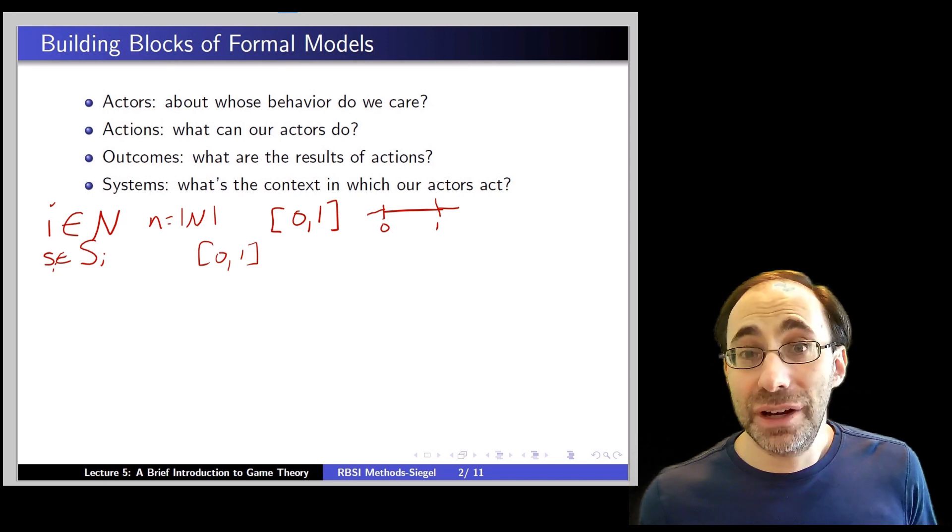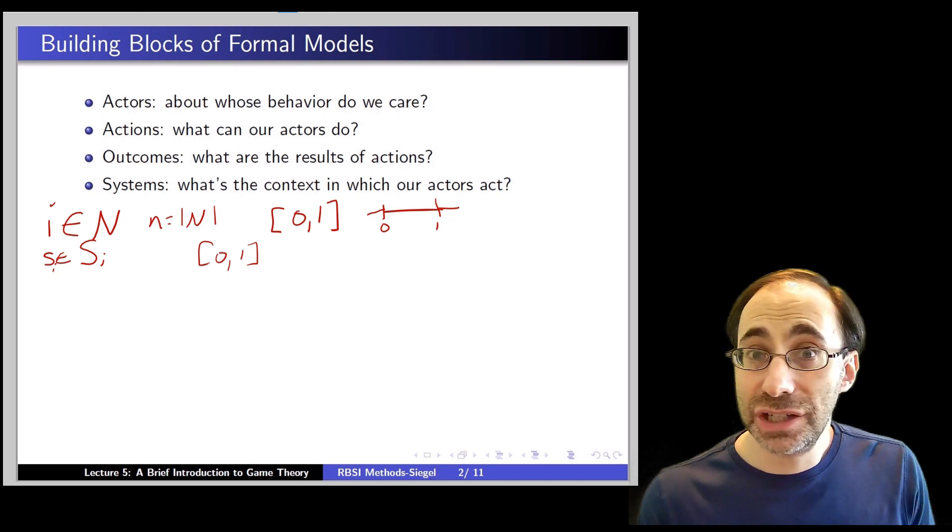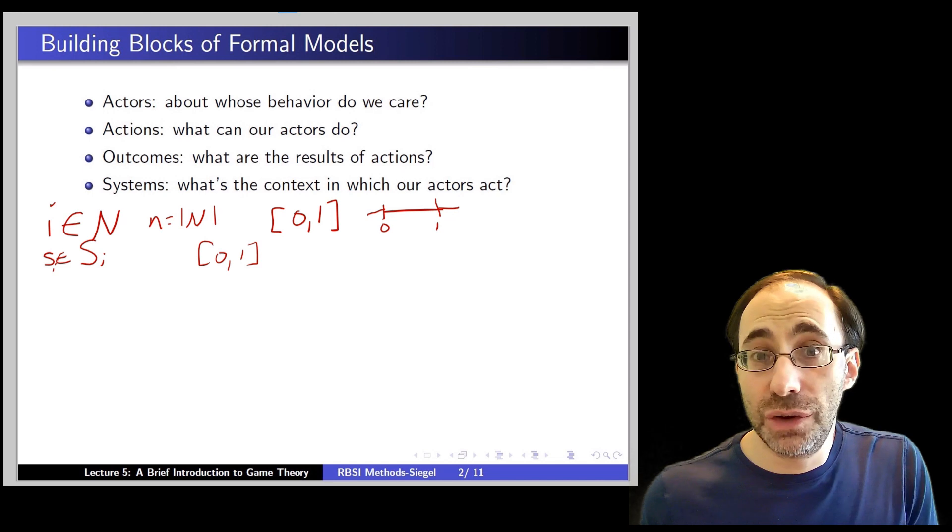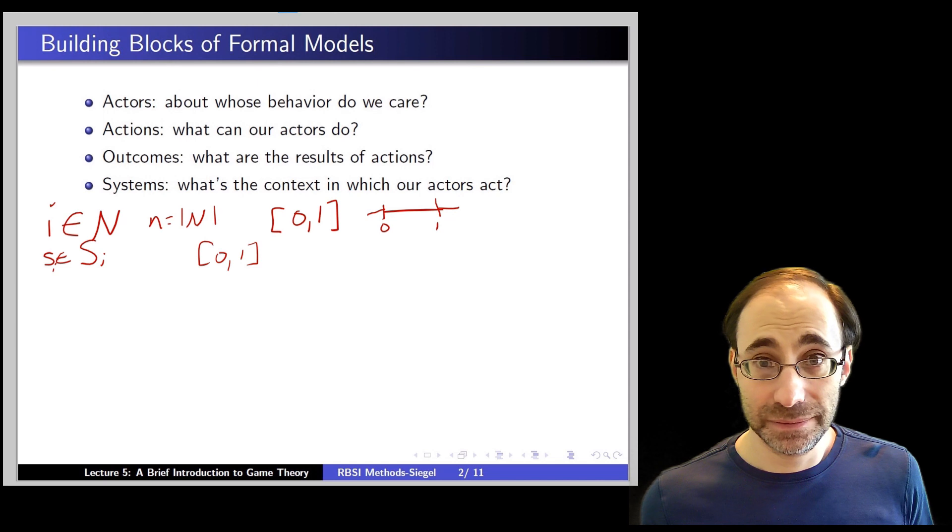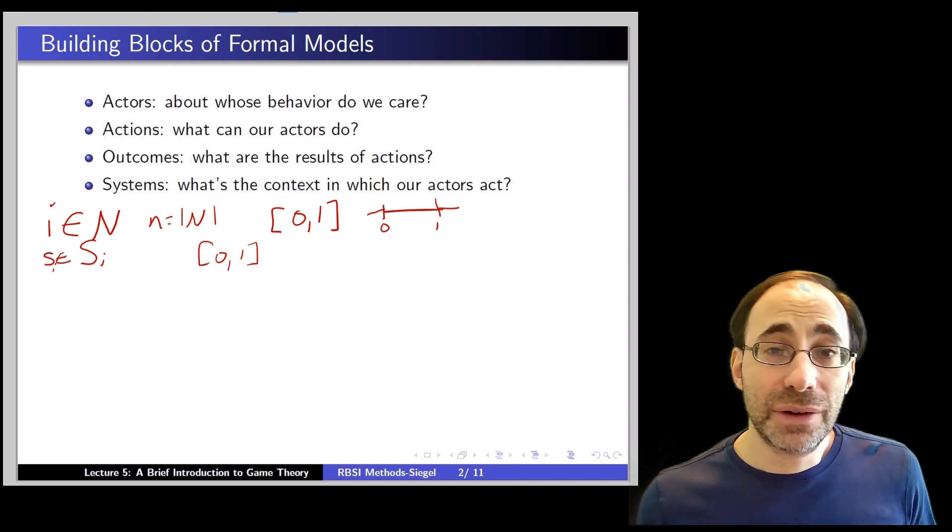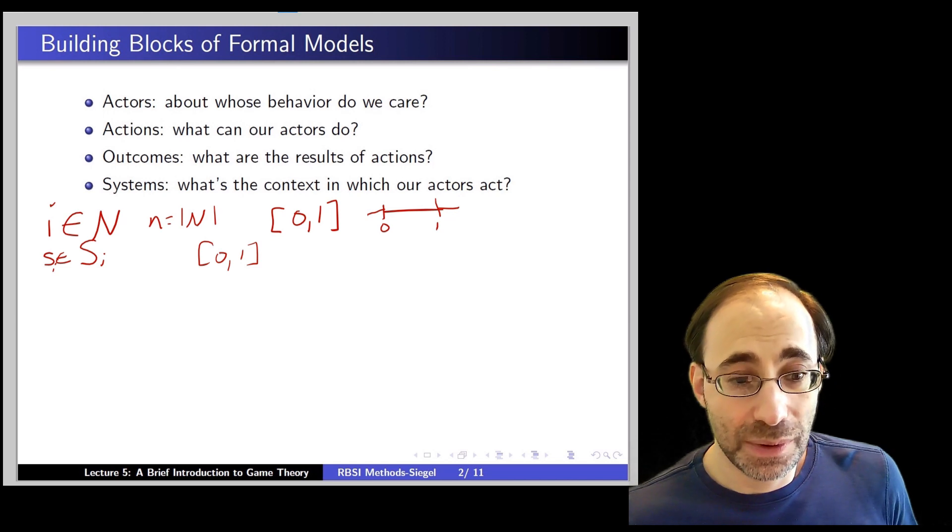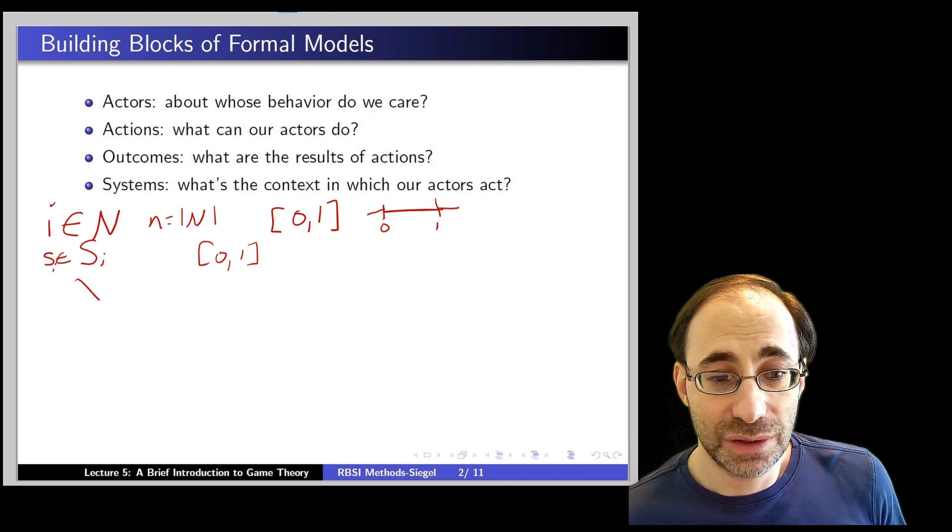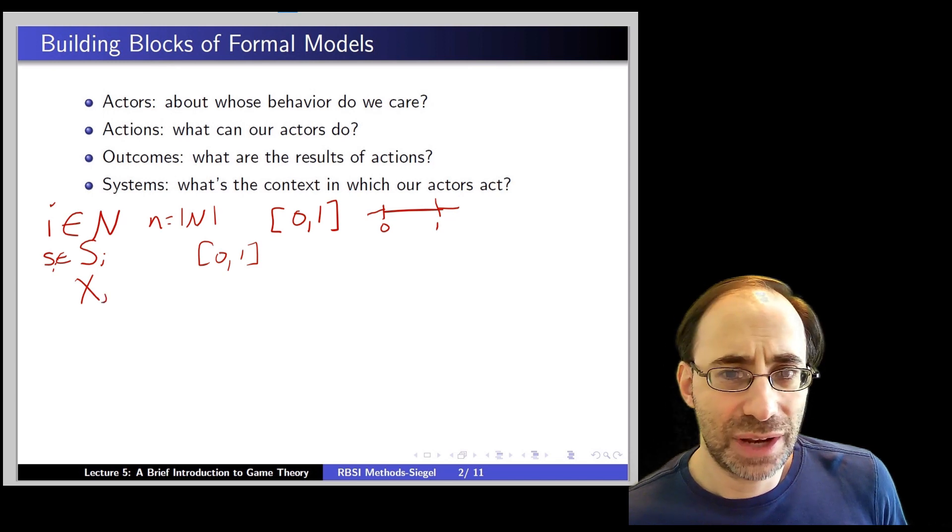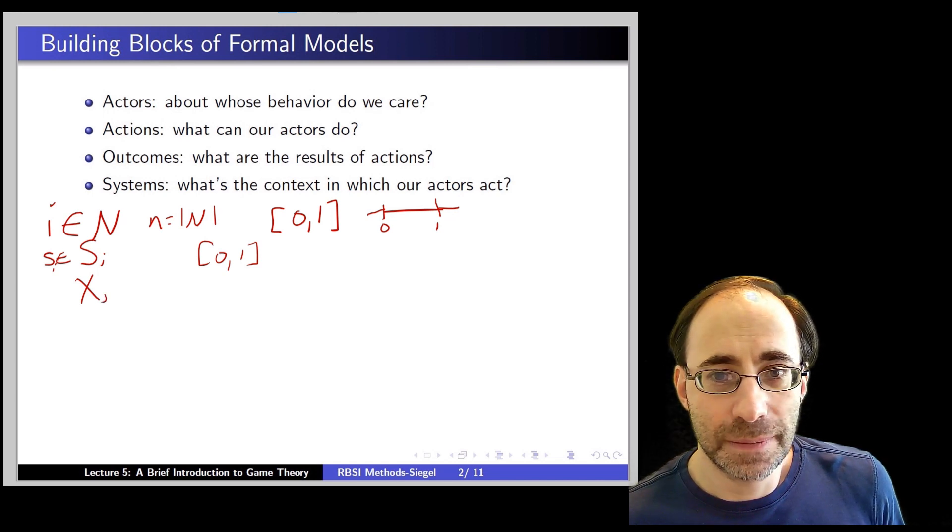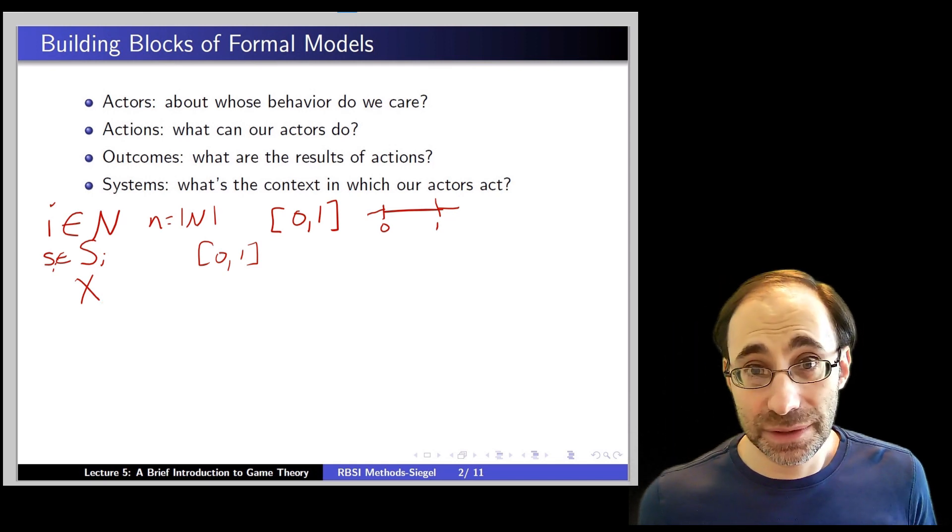Okay. The third building block here are the outcomes. Once each actor takes their actions, what are the results of those actions? What happens at the end of all these actions being taken place? Again, outcomes can come from various spaces here. So one way we can write that is if there's a discrete number of actions, we might label it by, well, actually in either case it's probably easier just to call it x. So I'll call it x here. So x here is the space of all possible outcomes.